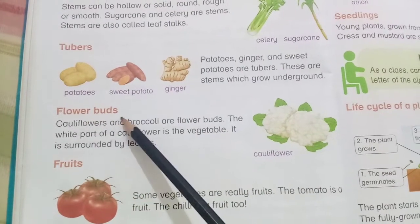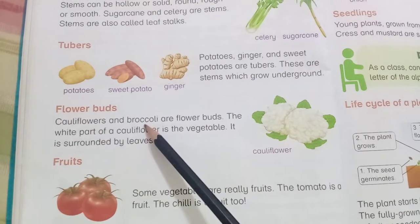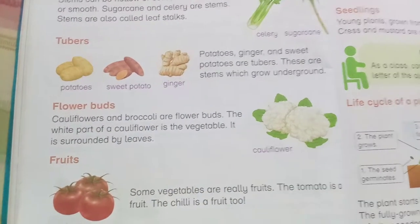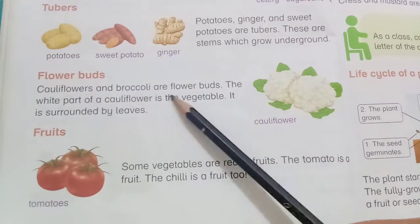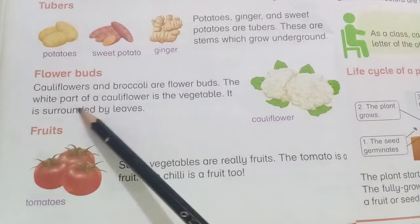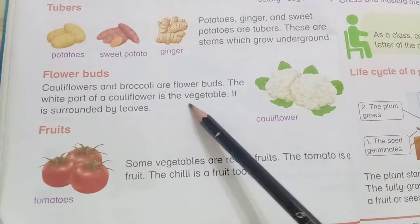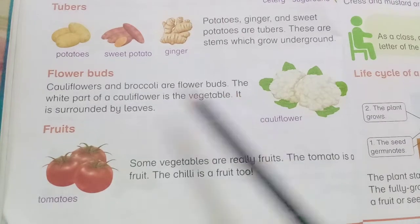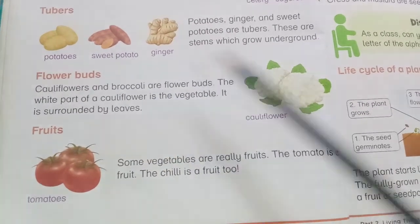Flower buds. Cauliflower and broccoli are flower buds. The white part of the cauliflower is the vegetable, and it is surrounded by leaves.